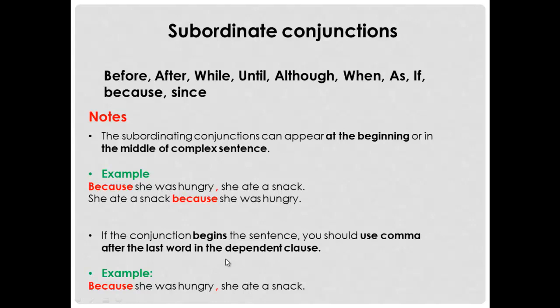Another note: if the conjunction begins the sentence, you should use a comma after the last word of the dependent clause. Example: 'Because she was hungry, she ate a snack.' 'Because' is the subordinating conjunction at the beginning of the dependent clause, so you add a comma after the dependent clause, then continue your sentence.